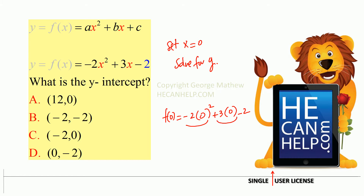So f of 0 is negative 2. What is the ordered pair? When x equals 0, y equals negative 2, giving us the point (0, -2). The answer is D.